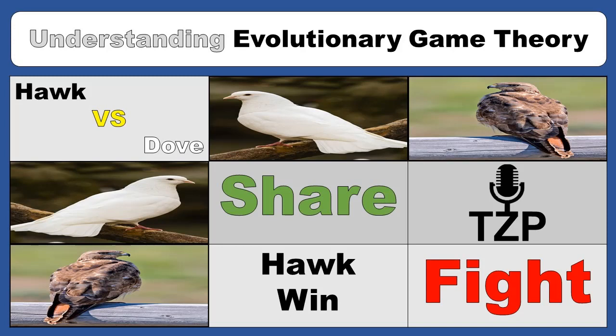So what should each criminal do? The dilemma faced here is that whatever the other does, each is individually better off confessing than remaining silent. Yet the outcome when both confess is worse for each than the outcome they would have received if both remained silent. This puzzle illustrates well the conflict between individual-based and group-based rationality — sometimes making the rational self-interested choice may not result in the best payoff compared to a less individually rational choice. But what would happen if the criminals knew there would be multiple rounds?